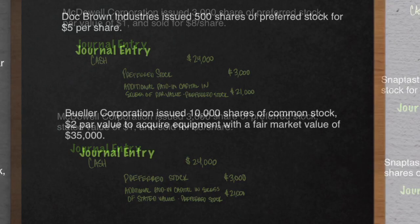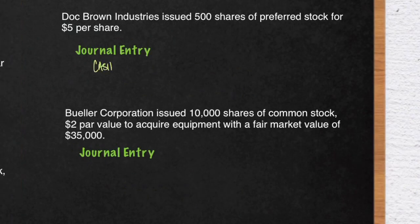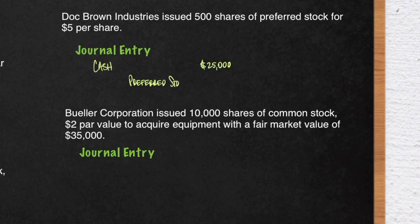Let's go to our next example. Doc Brown Industries issued 500 shares of preferred stock for $5 per share. Notice there is no par value or stated value, so it's a simple debit to cash for $25,000 and a credit to preferred stock for $25,000, with no additional paid-in capital being credited — because again, there is no par or stated value.